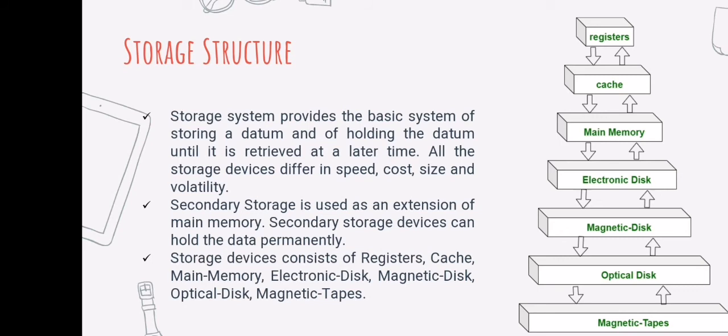Storage devices consist of volatile and non-volatile storage devices. A volatile storage device loses its contents when power is removed — for example, RAM or random access memory. A non-volatile storage device does not lose its contents when power is removed; it holds all data even when power is off.